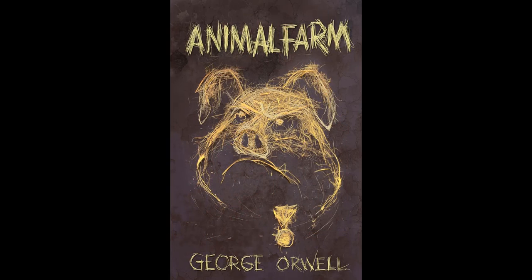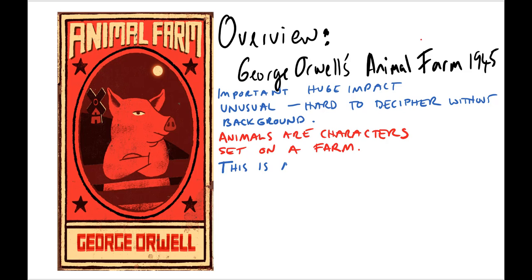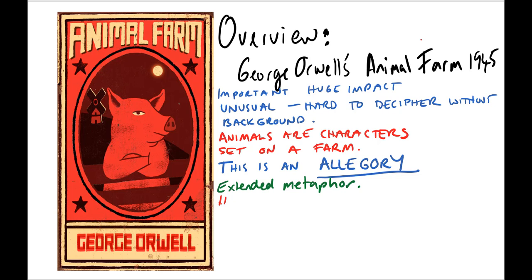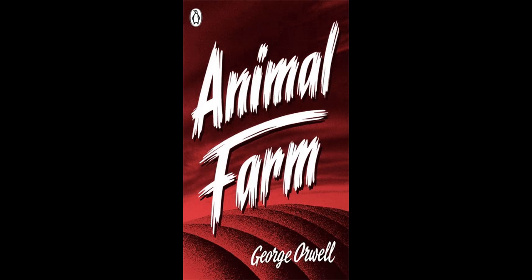It appears to be a story for children, although it's quite dark and some of the things that happen in it are quite horrific. In order to unlock what the novel is all about, it's important to understand that it is what we call an allegory — when you are using an extended metaphor in order to discuss something else. So on the surface it's a story about animals, but beneath that there's quite a complex subplot talking about human beings and some fairly significant historical events.